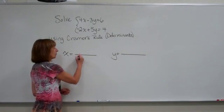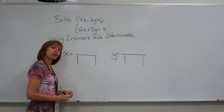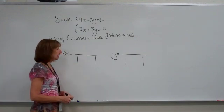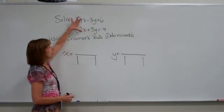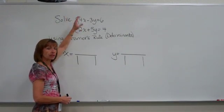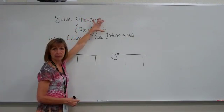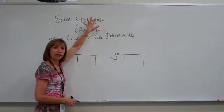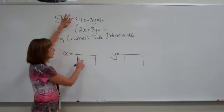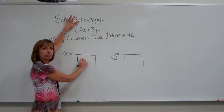The determinant in the denominator of each of the variables' values comes from making sure first that your system is in general form for each of the equations. So I have the x terms, the y terms, the equal sign, and then the numbers on the other side of the equal sign. When that arrangement is all set up, the denominator determinants use the coefficients from in front of the letters.